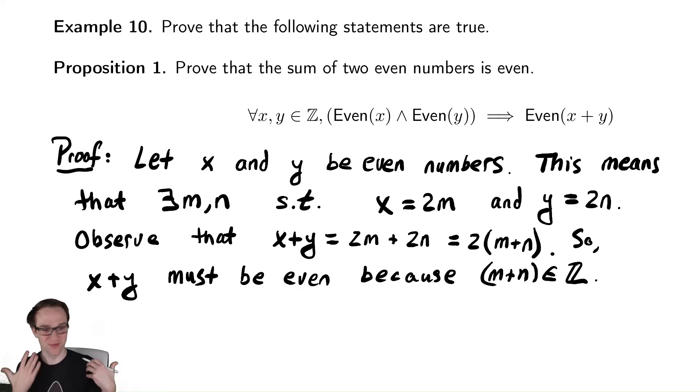This proof, hopefully, seems very straightforward. I let them be even numbers, then say 'what does that mean?' It means that I can write them in a certain way, and then I try to do whatever I can to use those facts to build my desired result.